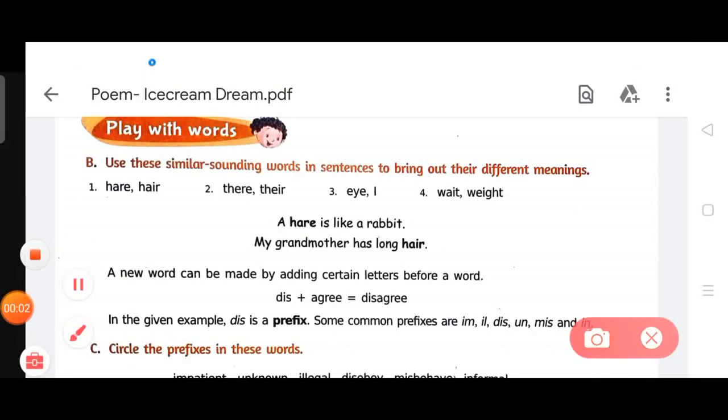Now look at next exercise B. Use these similar sounding words in sentences to bring out their different meanings. Here you can see first one: hare, hair, there, their, I, I, wait, wait. Here you can see these all words are homonyms and this means they are pronounced exactly the same way but spelled differently and the meanings are different too. Here you have to make sentences with these similar sounding words.